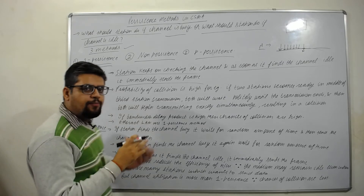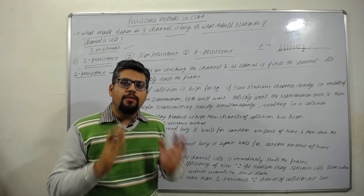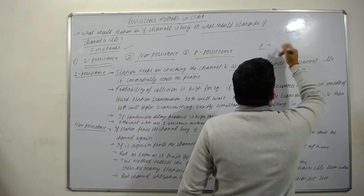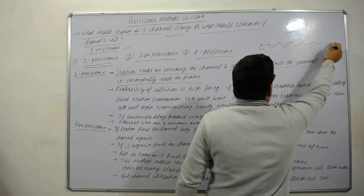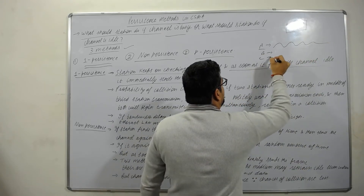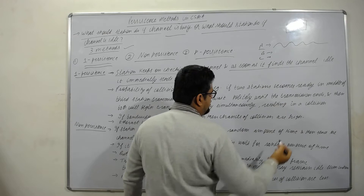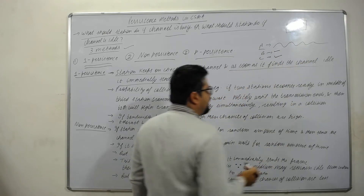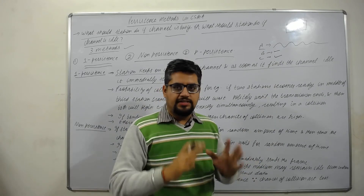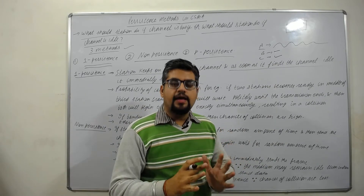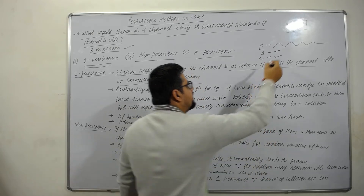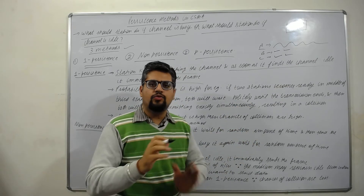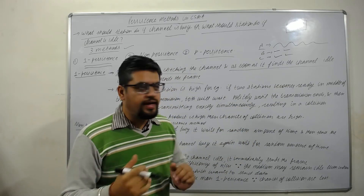Since every station will immediately send the frame when the channel becomes idle, the probability of collision will be very high. Suppose station A is sending data, and stations B and C also want to send data. At that time the channel will be busy, so B and C will wait. But as soon as the channel becomes free, B and C will immediately send, and the data will collide.